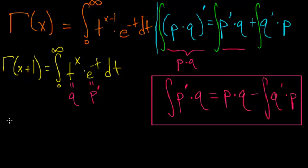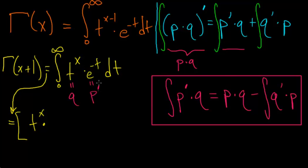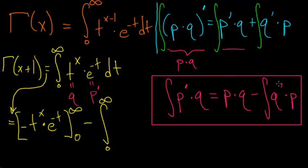Applying the formula to this integral, gamma evaluated at x plus 1 is equal to the product of p times q. Here q is t to the x, multiplied by the function p. Since we have the derivative of p, we need the antiderivative of e to the minus t, which is just minus e to the minus t. This expression is evaluated between 0 and infinity. Then we subtract the integral from 0 to infinity of the derivative of q: taking the derivative of t to the x gives x times t to the x minus 1, multiplied by p, which is negative e to the minus t — placing the negative outside makes this a plus — so this is multiplied by e to the minus t, dt.